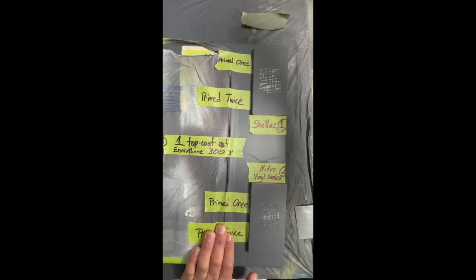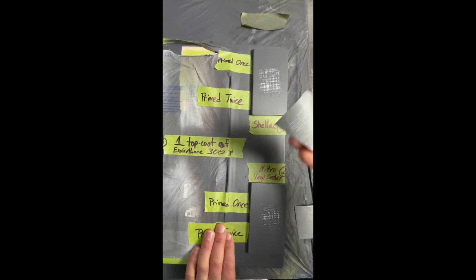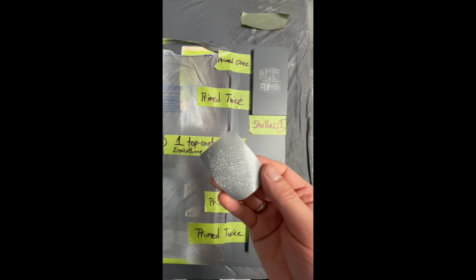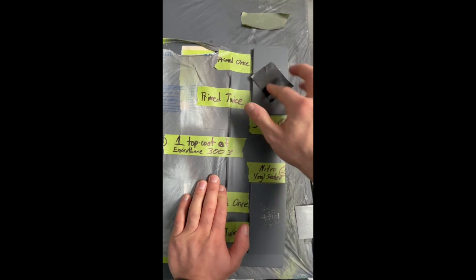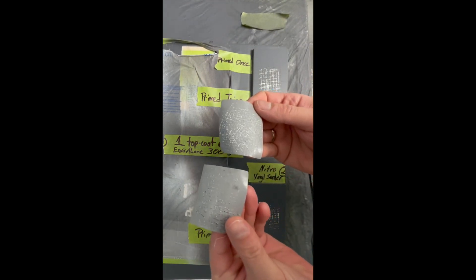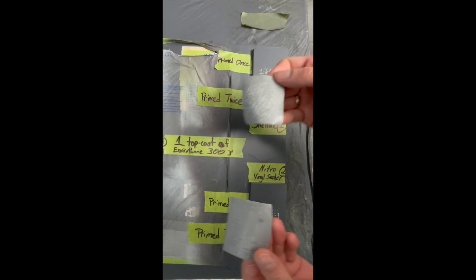So overall, it looks like you're going to get better adhesion, a little bit more durability with the vinyl sealer than the shellac. As you can see, we're getting a lot more material coming up with the shellac, especially with the Envirolac because the Envirolac definitely does not pair well with shellac.